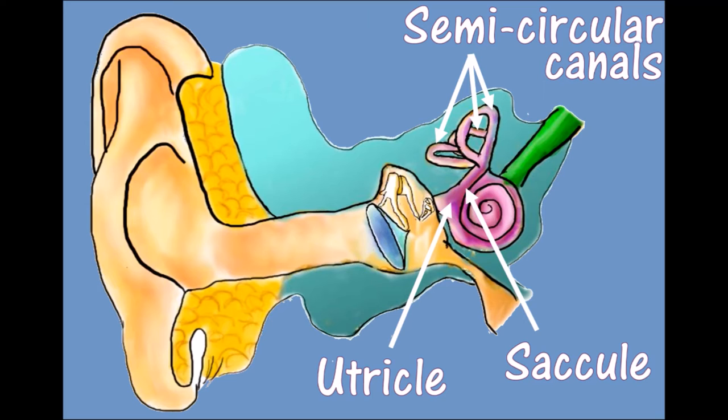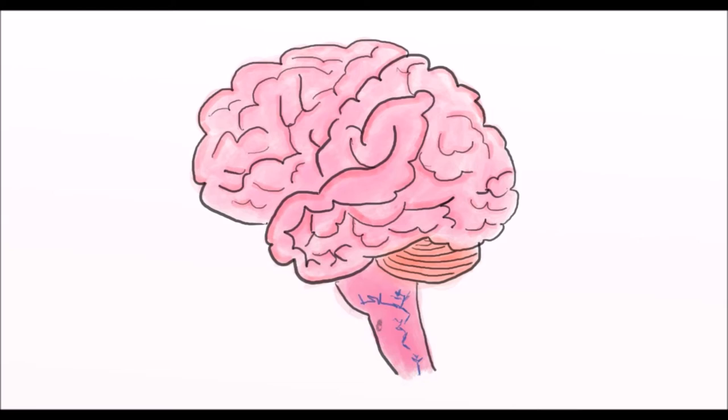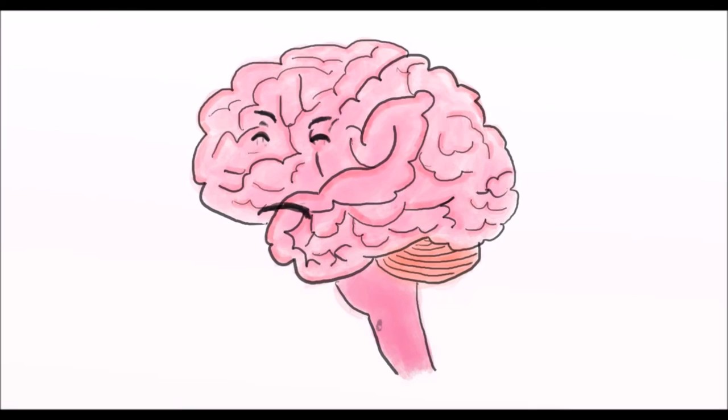As you move your head, the fluids in these organs also move, pushing and pulling tiny hairs that send signals to the brain and tell you that you're moving. These signals go from your ears to the vestibular nuclei in your brainstem, which then send signals to your eye muscles to make them move.